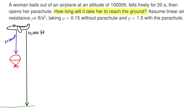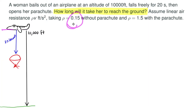As we're thinking about this problem, we really need to break it into two separate cases. The first case is whenever she jumps out of the airplane and free falls for 20 seconds. The reason we need to separate these two cases is one, we have different air resistance — lower before she opens the parachute and higher after. Additionally, we have different initial velocity and initial position.